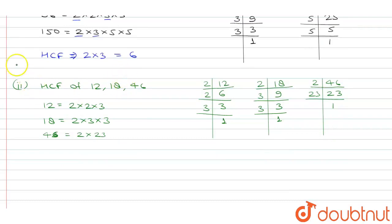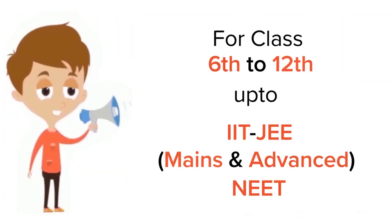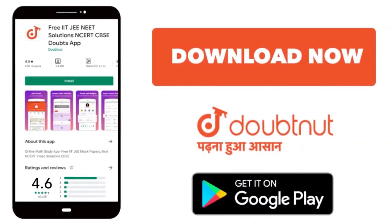Now we have to find the Highest Common Factor of these three values — 12, 18, and 46. We write the common factors across all three. The only common factor in all three is 2. So the HCF of 12, 18, and 46 is 2. I hope this answered your question. For class 6 to 12, IIT JEE, and NEET level — trusted by more than 5 crore students — download the DoubtNet app today.